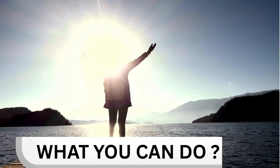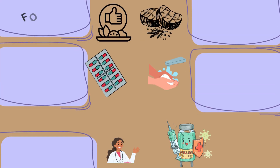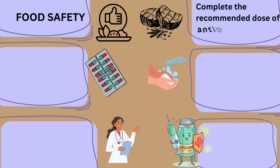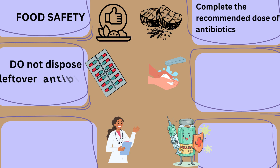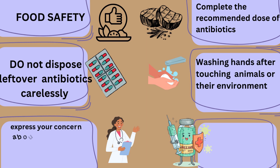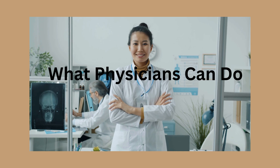Let's learn what you can do as an individual to prevent AMR: by taking care of your personal food safety, by completing the recommended dose of antibiotics, by not disposing of leftover antibiotics carelessly, by washing hands after touching animals or their environment, by expressing your concern about resistance with healthcare professionals, and by taking vaccination on time.